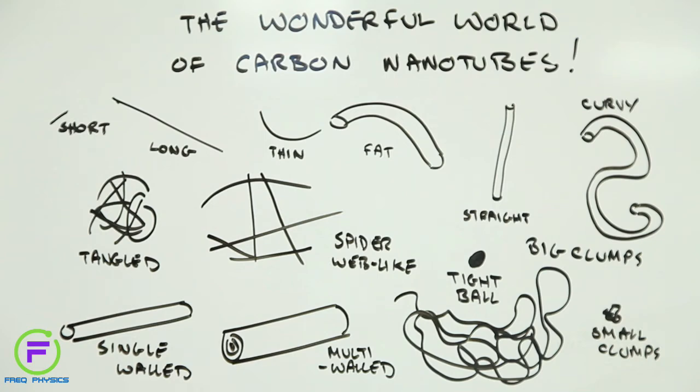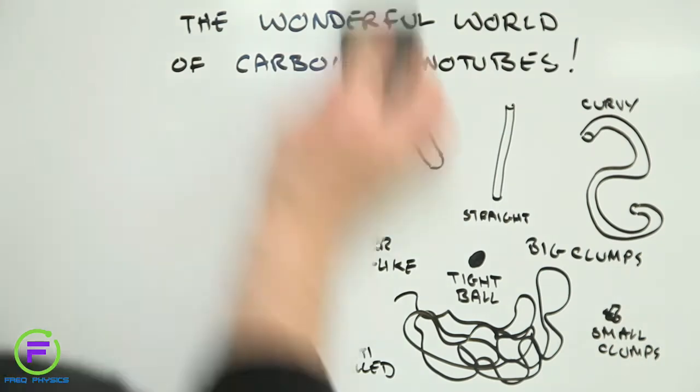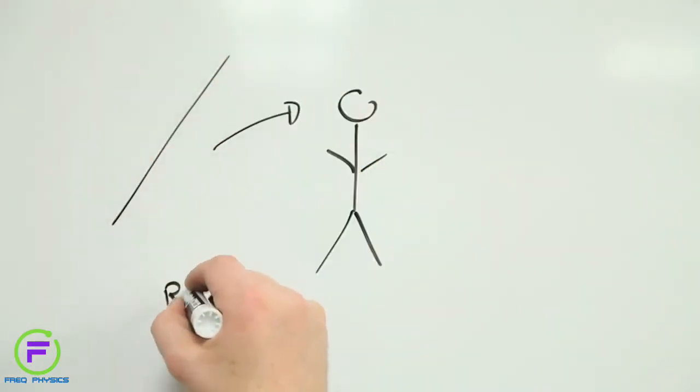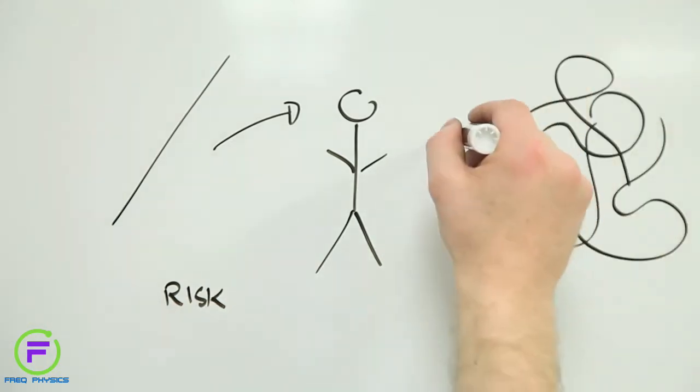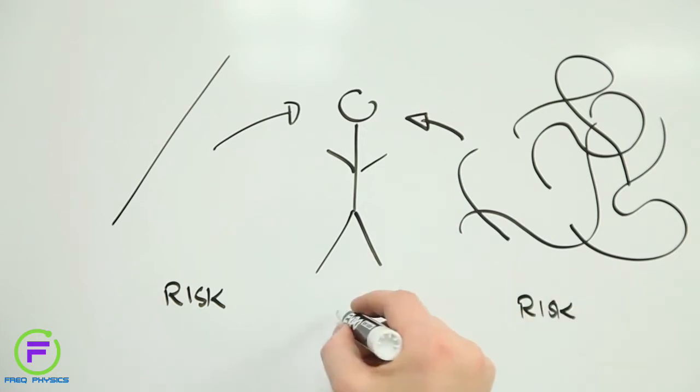And the risks they present depend critically on what type of carbon nanotube you're looking at. A very long, thin, straight, multi-walled carbon nanotube, for instance, is a completely different beast to a spiderweb-like cluster of single-walled carbon nanotubes.